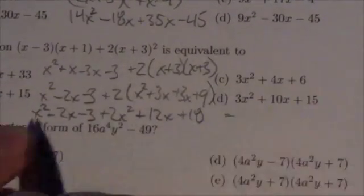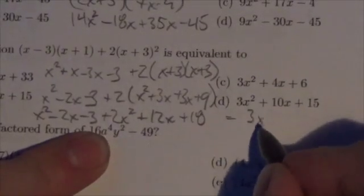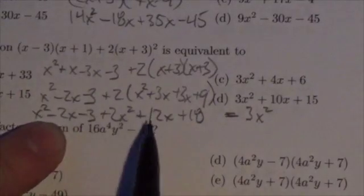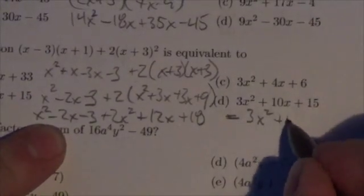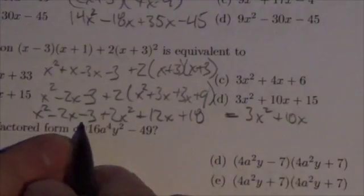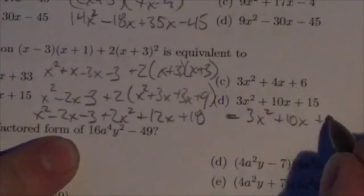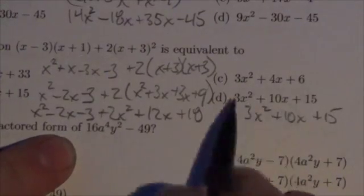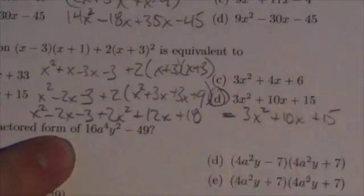Putting all of that together, this is going to equal—well, there's an x² and 2x², that's 3x² terms. I've got a minus 2x and a plus 12x, that's going to be plus 10x. Negative 3 plus 18 is plus 15. So I'm looking for 3x² plus 10x plus 15. Well, it's just above me. That's option D.